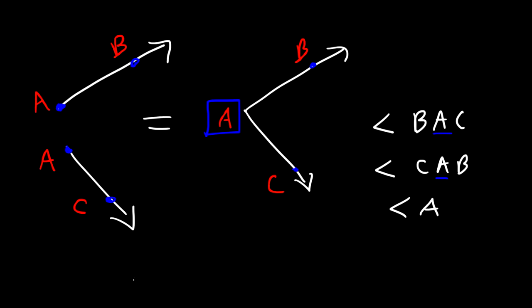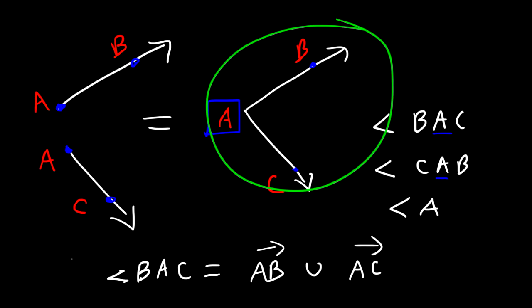So basically, angle BAC is the union of ray AB and ray AC. So what that means is that this whole angle is basically the sum of this ray AB and the second ray AC. So make sure you know the difference between union and intersection, which we'll talk more about it later in this video. So this is the union symbol and this is the intersection symbol.